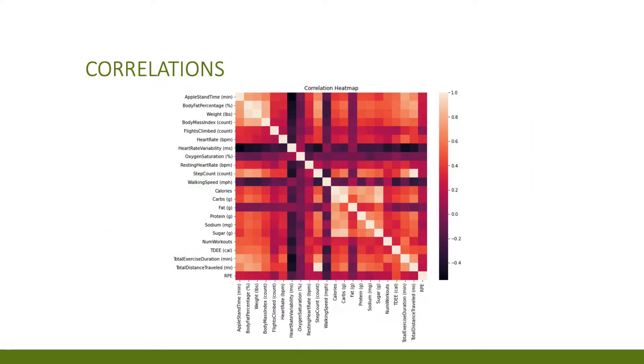We can also take a look at this heat map to see how variables are related. As you can probably see, there does seem to be multi-collinearity between many of the predictors. We will deal with this issue when constructing some of our models.